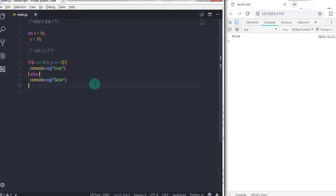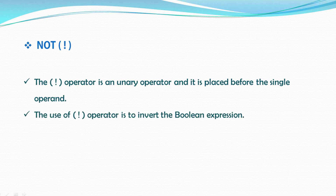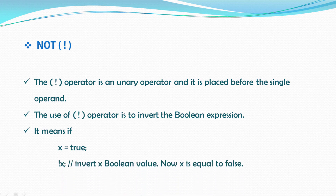As simple as that. You are not limited to using two expressions only — you can add multiple expressions with logical operators. Now, the third and last logical operator is NOT. The NOT operator is a bit different from AND and OR operators. NOT operator is a unary operator and it is placed before a single operand. The use of the NOT operator is to invert a boolean expression — it means if x is equal to true, then using the NOT operator you can invert its value by specifying the NOT operator before the variable.